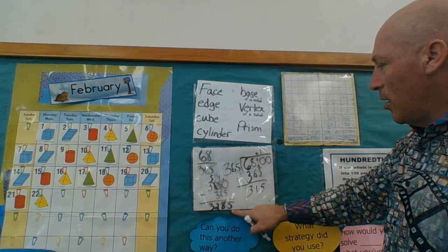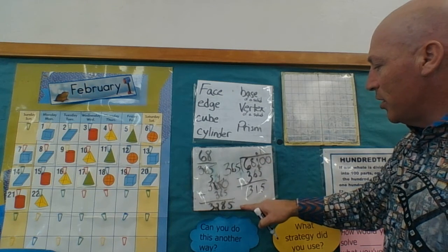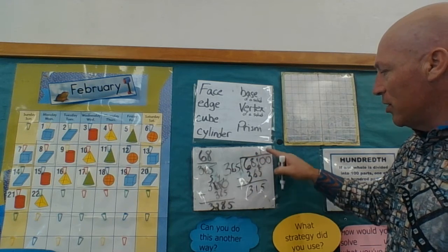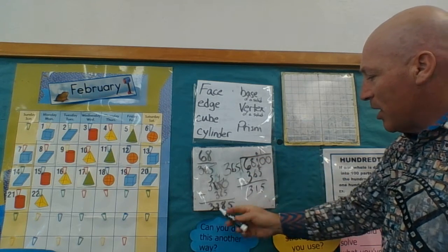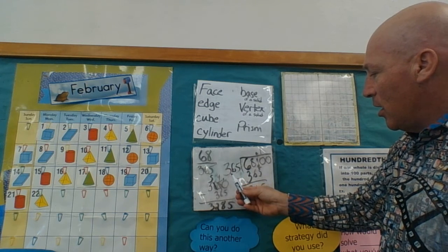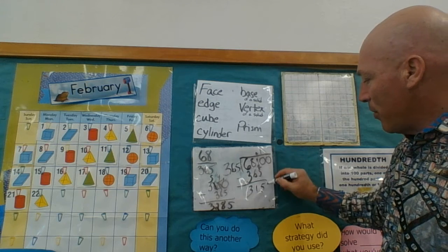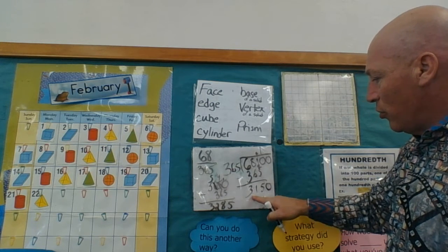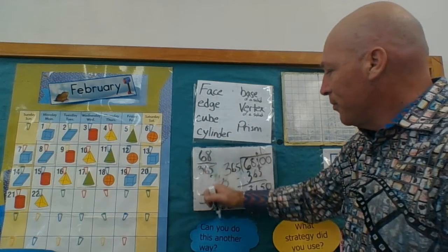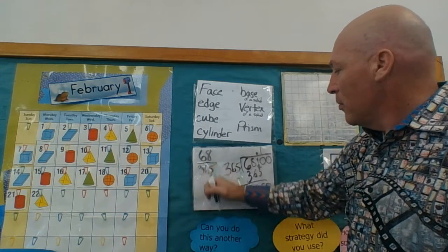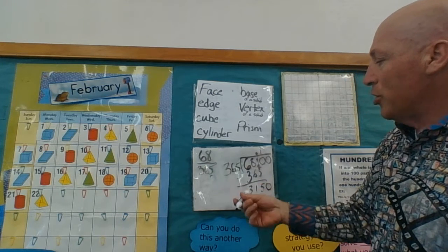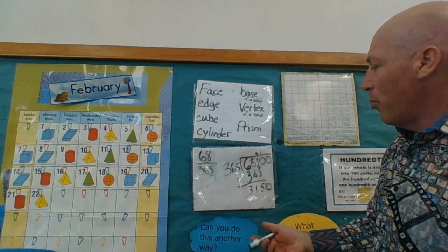That was just a bit too much. My guesstimation wasn't quite right because I came up with 3,285. When I bring my zero down, 3,285 is a bit too big, so that didn't work. Now I'm doing this in real time — I didn't pre-do this problem because I want to show you what really goes on when you're doing these problems manually. So now I know it's going to be 8.